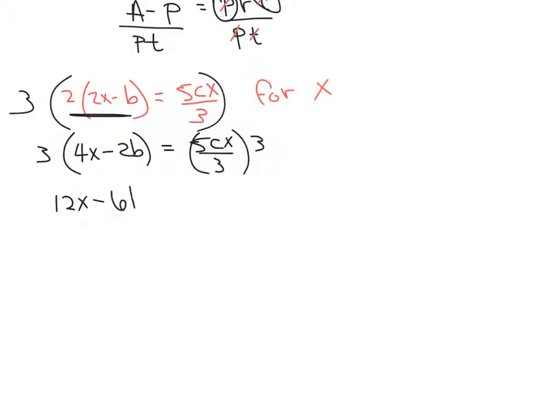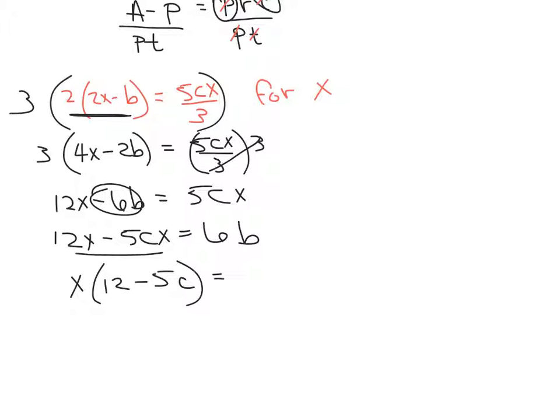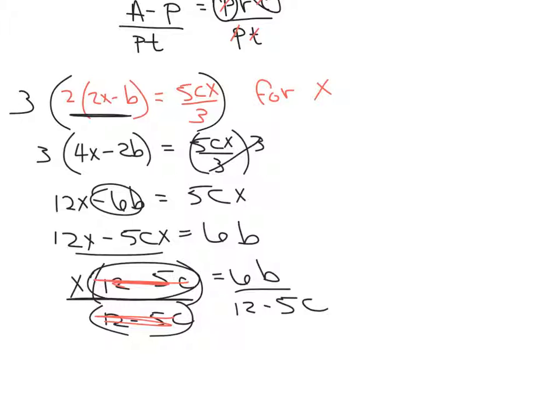Now we have 12X minus 6B equals, those cancel, 5CX. So let's get all of the X's together, and let's move the negative 6B, or minus 6B to the other side, and it changes to a positive. Now we're going to take the X out of there, and we get 12 minus 5C. So we factored an X out of there. Now, this X is multiplied by what's in parentheses. That being the case, we can divide both sides by what's in the parentheses, and that cancels that, and that gives us X equals 6B over 12 minus 5C. So there we go.